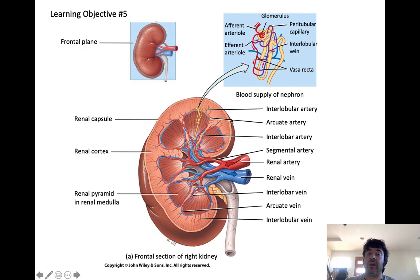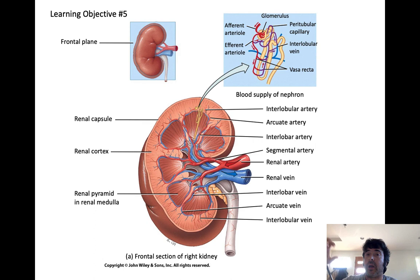The kidneys account for about 3% of your body mass, but they receive more than 25% of blood flow. More than 25% of the blood flowing through your body at any given point in time is being diverted to the kidneys, and the reason why is because the kidneys filter blood plasma.